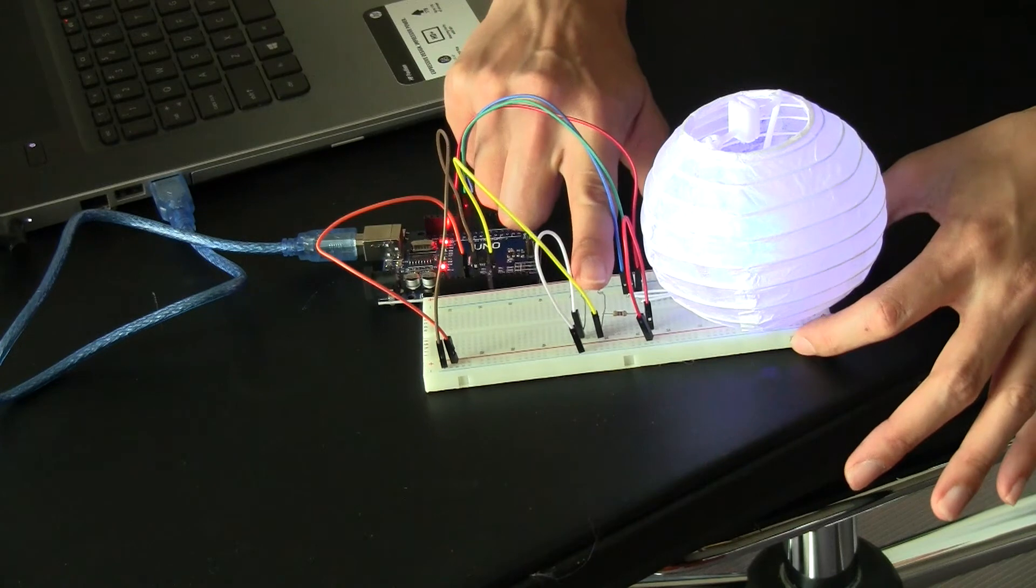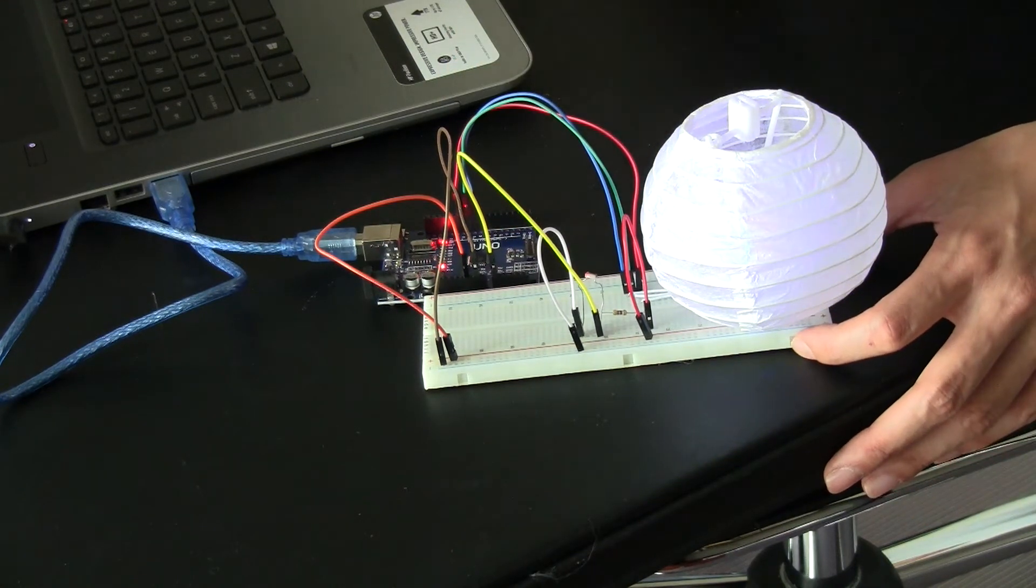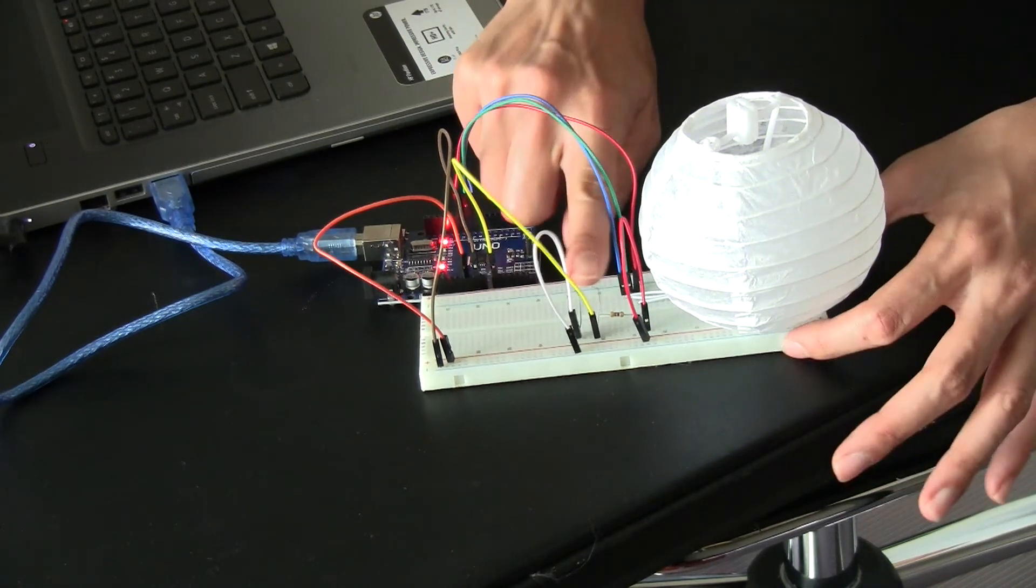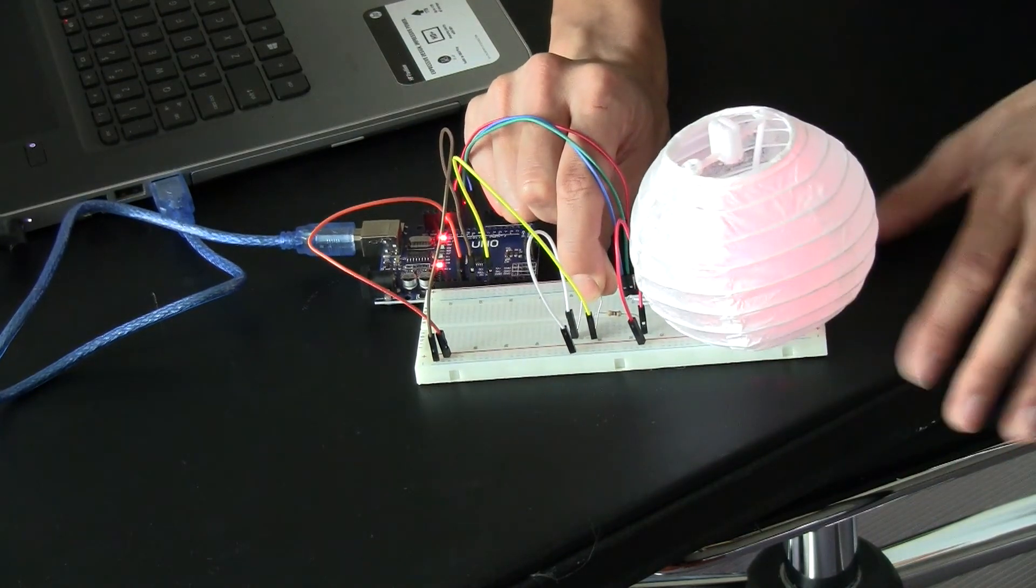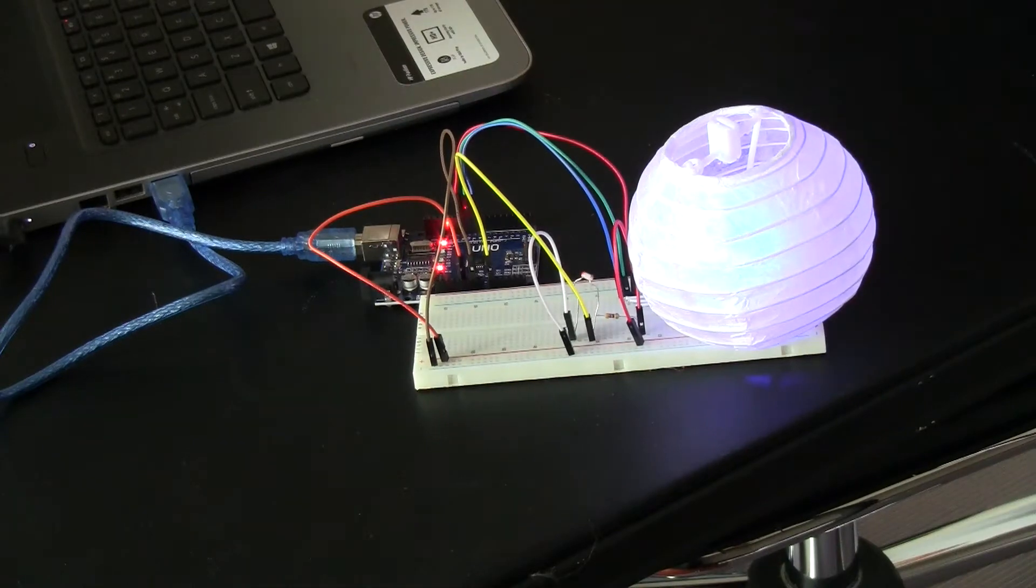This is how you kind of control what your mood lamp does is with this photo resistor here and it cycles through. So now it's bright again. We'll try to get it back dark again and get these lights to light up and here we go, here's the mood lamp.